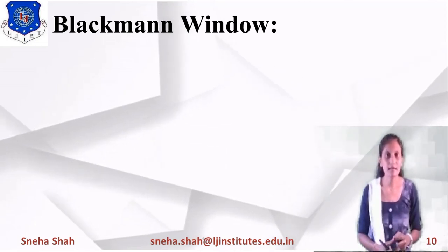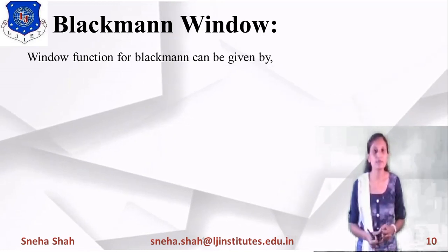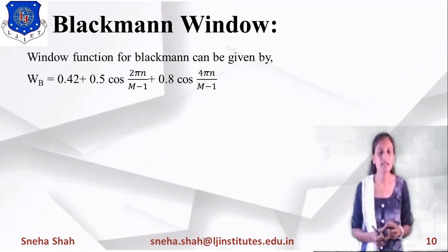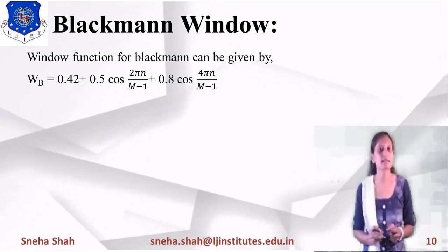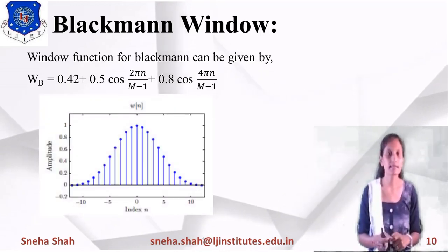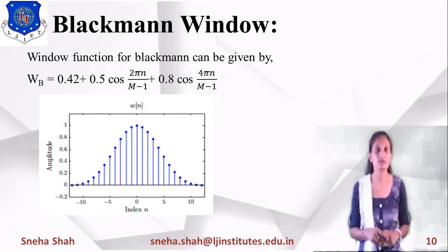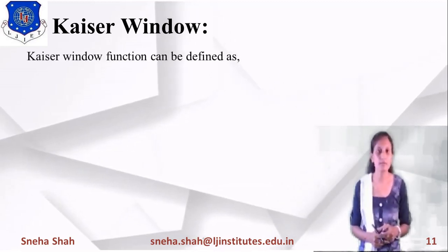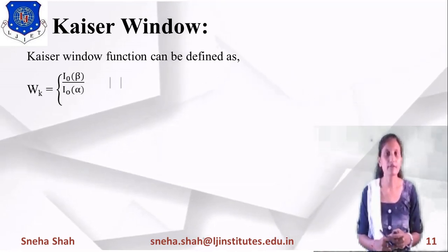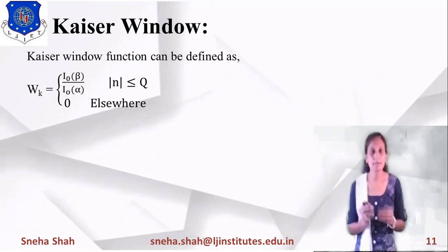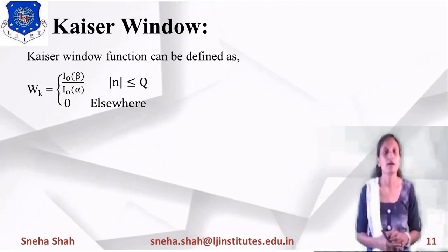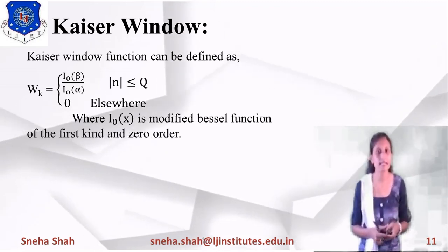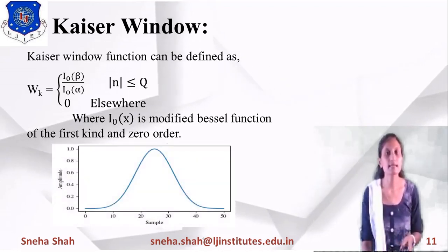The next type of window is the Blackman window: W_BL(n) = 0.42 + 0.5·cos(πn / (M−1)) + 0.08·cos(4πn / (M−1)). Increasing the number of cosine terms makes the window sharper. The next type is the Kaiser window, defined as W_K(n) = I_0(β·√(1 − (2n/(M−1))²)) / I_0(α), where I_0(x) is the modified Bessel function of the first kind of order zero.